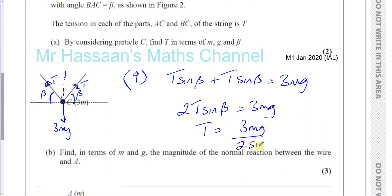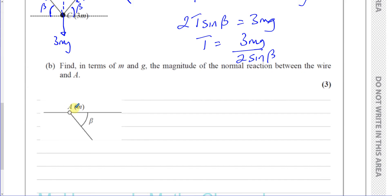Now part B asks us to find, in terms of M and G, the magnitude of the normal reaction between the wire and ring A. Considering the forces acting on ring A: the tension pulls at angle beta, the weight MG acts downward, and there is a normal reaction force acting upward from the wire. The tension has a downward component, so the reaction acts upward to maintain equilibrium.